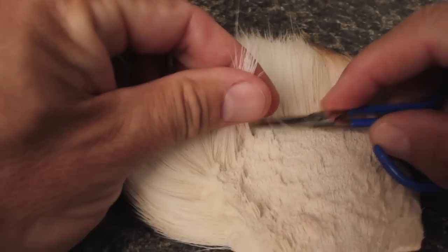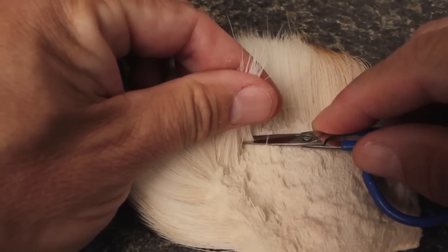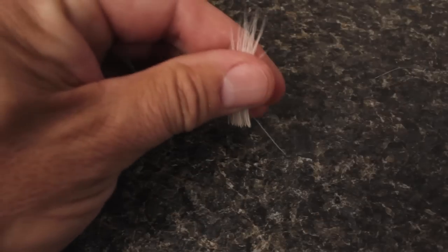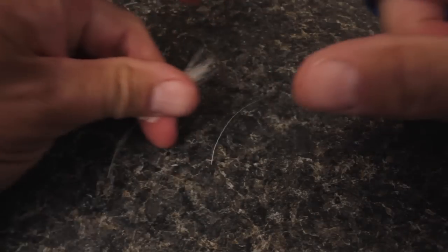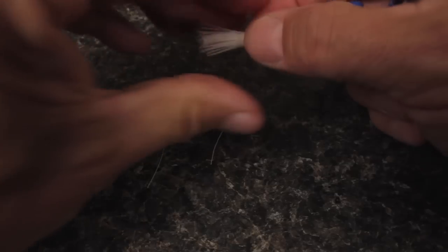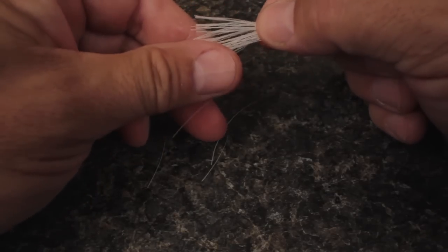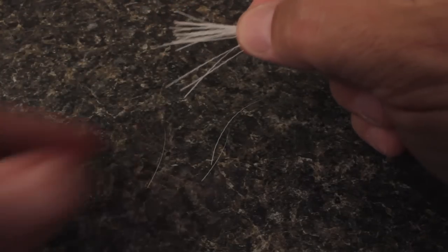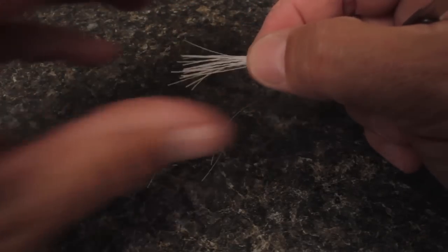For the emerging wings, snip a small clump of deer body hair free from the hide. How much deer hair really depends on its thickness and the size of the fly. I'm guessing I've got about 20 hairs here.